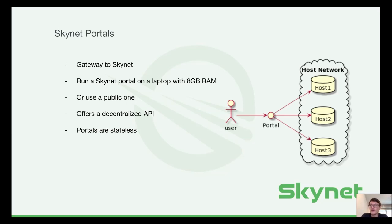A portal can be thought of as a gateway to Skynet. They offer decentralized APIs, which means that everyone hosting portals will provide the same API through them. Portals are also very resource-friendly and can be run on a simple consumer device with about 8 gigabytes of RAM. You can also use one of the available public portals to get started right away without having to install anything. One thing we are very proud of is the fact that portals are stateless — every portal provides the same content through their API. So a file or SCAP uploaded to one portal is immediately available on all the other portals without the portals communicating with each other or being hosted by the same entity.